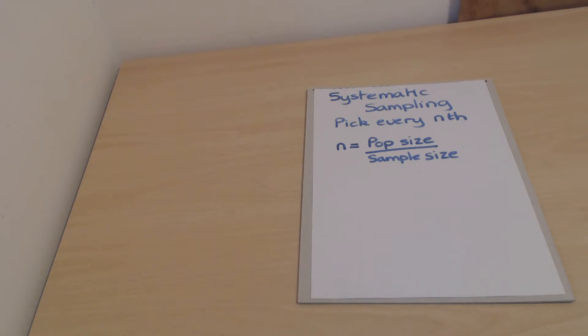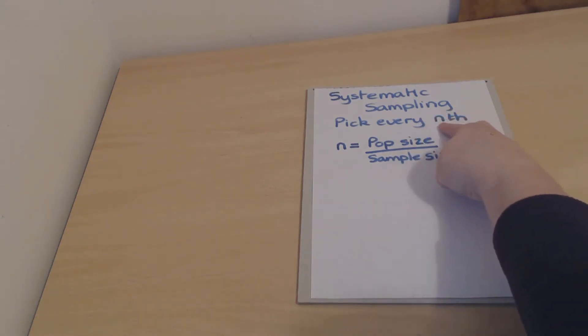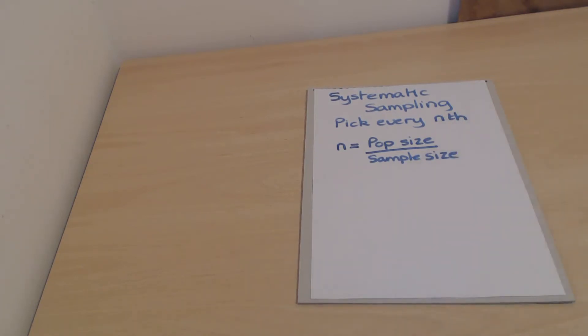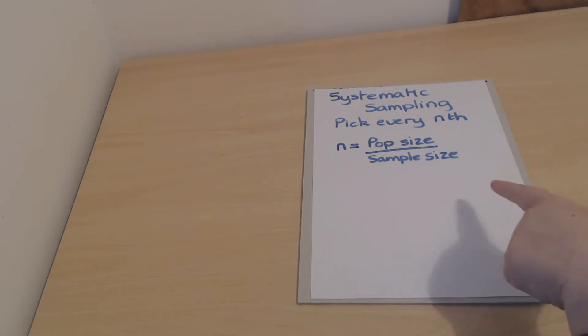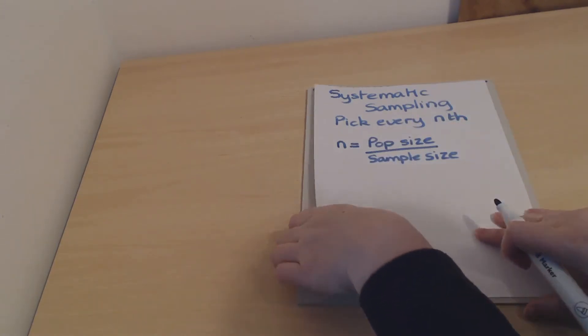So how do we work out what the n is in the nth? We take the population size and divide it by the sample size. For example, if you had a class of 30 and wanted a sample size of 5, you'd do 30 divided by 5, which gives you 6. Then you would pick every 6th person from the list. Let's look at some examples.